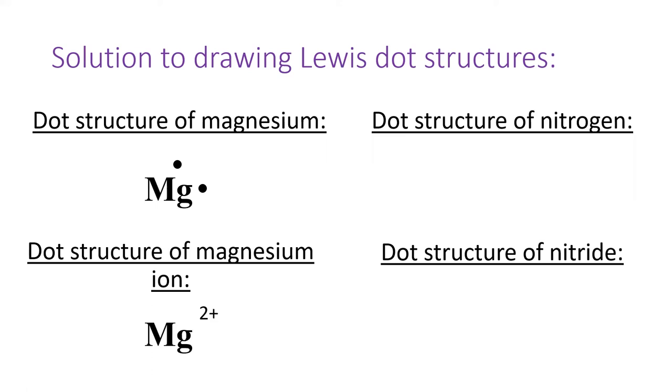Magnesium ion has a two plus charge, meaning it has lost two valence electrons. The Lewis dot structure for magnesium ion does not have any dots because we lost those two electrons. However, we do indicate the charge of the ion in the upper right corner. Magnesium ion fulfills the octet rule.